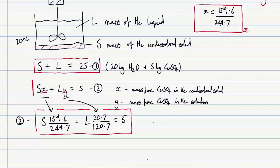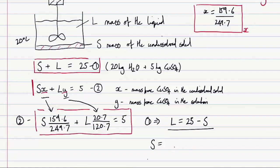Remembering that we want to find S, the mass of undissolved solid: equation one gives us that L = 25 − S. Substituting this into equation two and solving, we find that S — the mass of undissolved copper sulfate existing as copper sulfate 5-hydrate — is equal to 1.523 kilos.